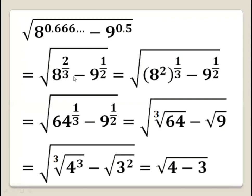Now this can be written as 8 squared, all to the power 1 over 3, minus 9 to the power half. 8 squared is 64. So our number is square root of 64 to the power 1 over 3, minus 9 to the power 1 over 2.